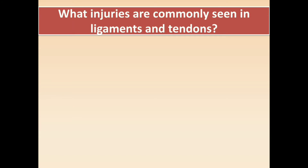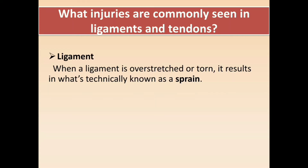We will now know about two terms: strain and sprain. These two terms have a connection with ligaments and tendons. First, ligament injury — when a ligament is over-stressed beyond its capacity and becomes over-stretched, it results in what is technically known as a sprain.